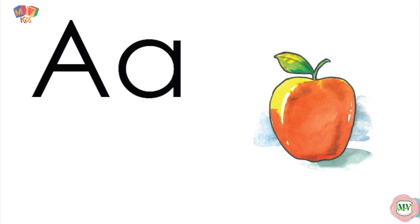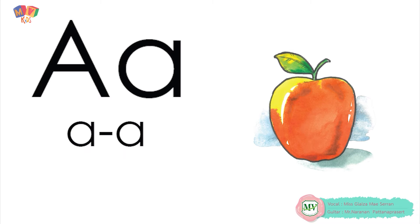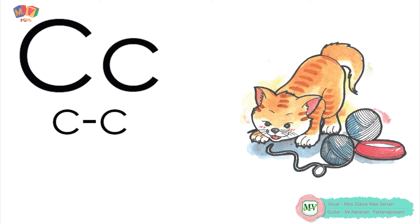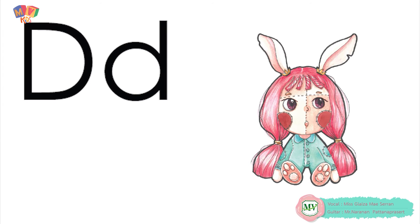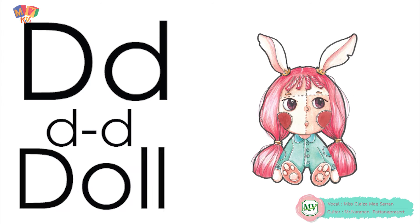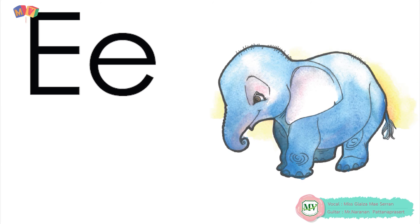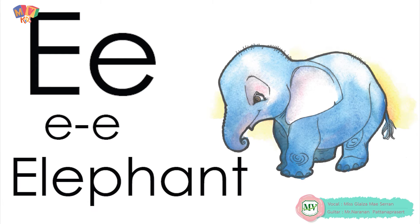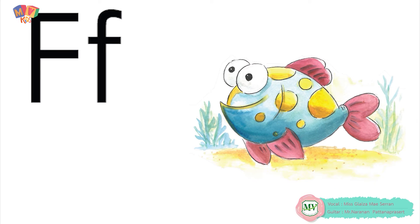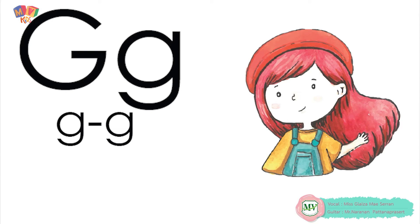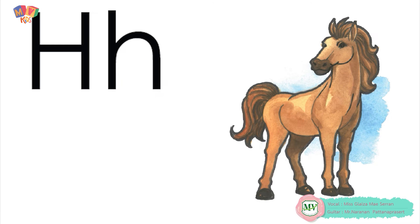A is for apple — a, a, apple. B is for ball — b, b, ball. C is for cat — k, k, cat. D is for doll — d, d, doll. E is for elephant — e, e, elephant. F is for fish — f, f, fish. G is for girl — g, g, girl. H is for horse — h, h, horse.